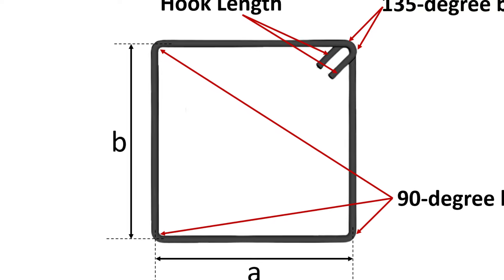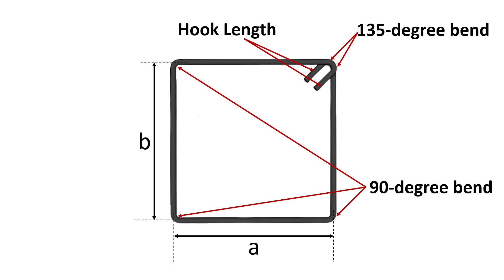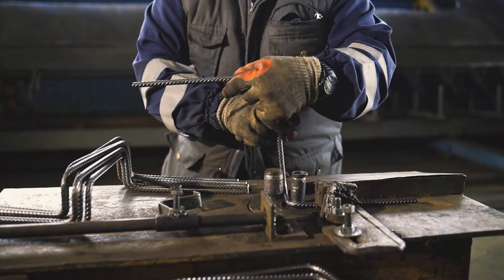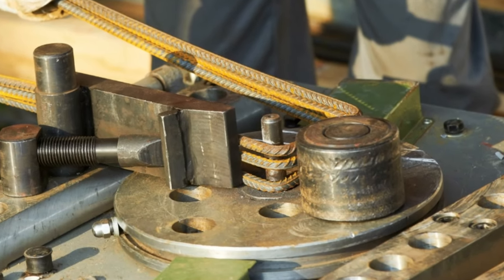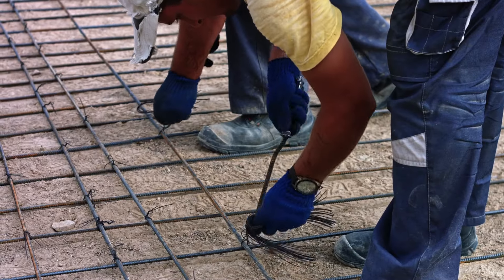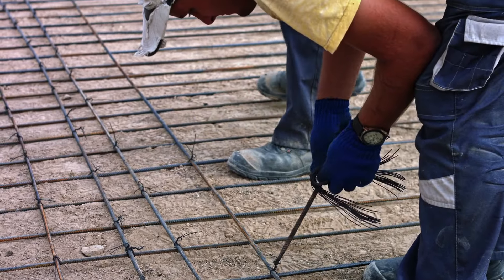The bending process introduces bends, hooks, or other shapes that affect the overall length of the rebar needed for a particular application. The bend reduction compensates for the length of the rebar used in making these bends and shapes, ensuring that the final rebar fits precisely as per the design requirements.